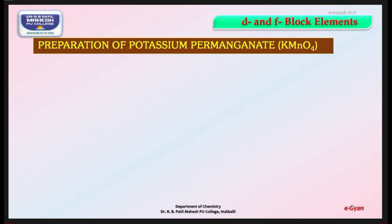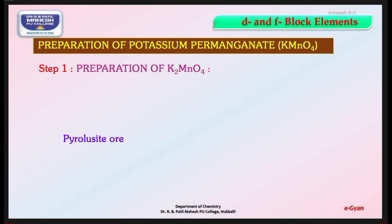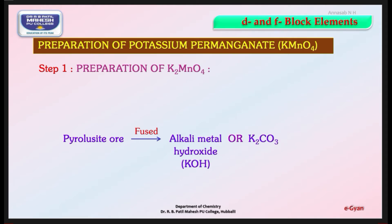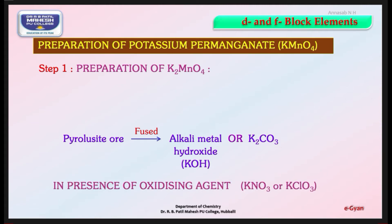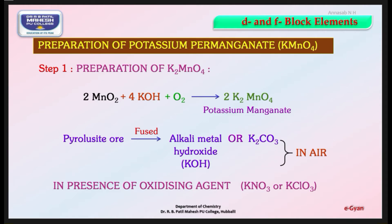Preparation of potassium permanganate KMnO4 involves two steps. In the first step, we prepare K2MnO4 from pyrolusite ore, that is MnO2. Pyrolusite ore is fused with an alkali base — KOH, NaOH, or K2CrO3 — in the presence of an oxidizing agent like KNO3 or KClO3, in presence of air, to give K2MnO4. The reaction is: 2MnO2 + 4KOH + O2 → 2K2MnO4 + 2H2O.